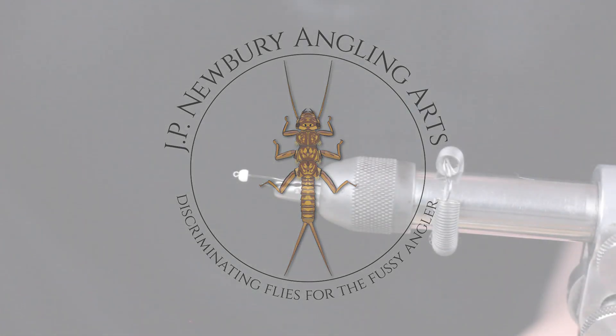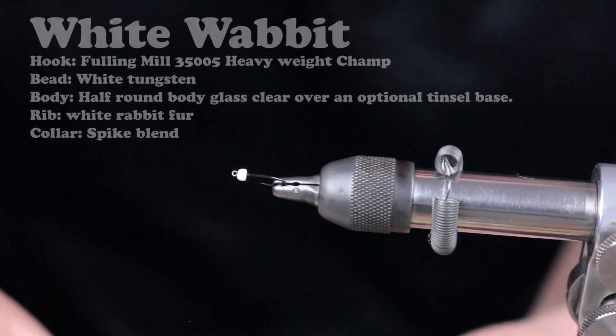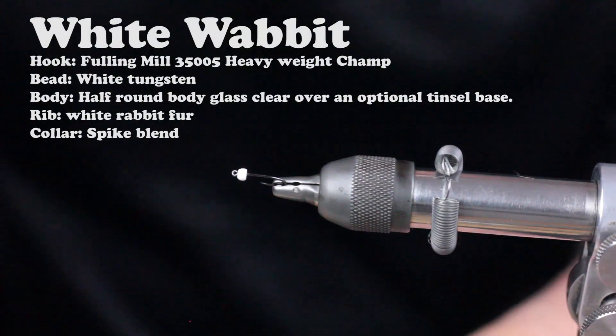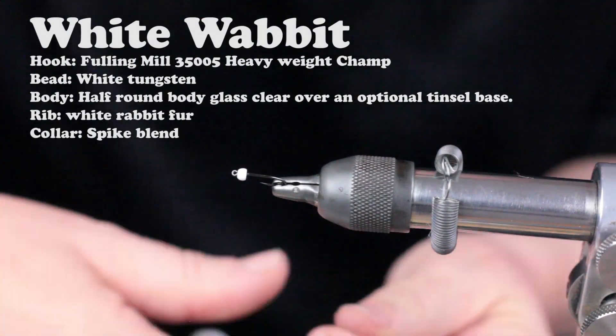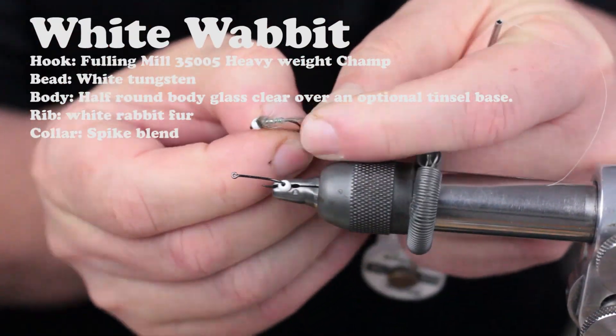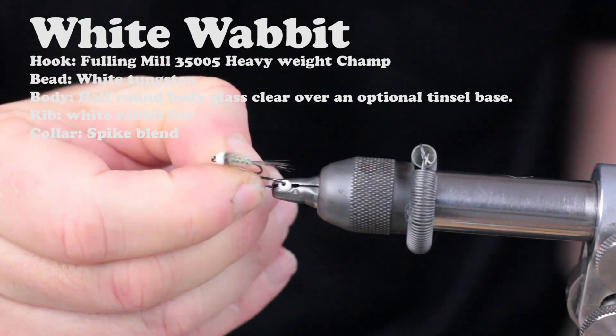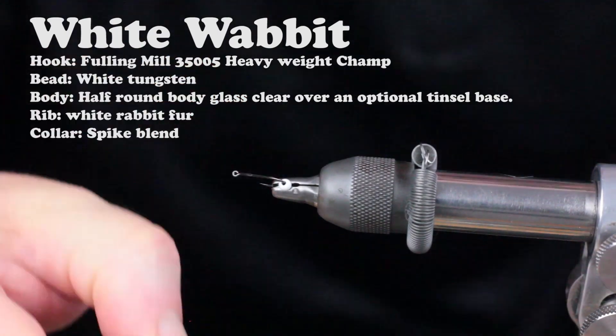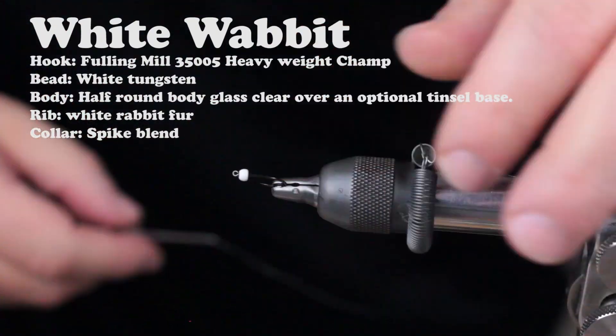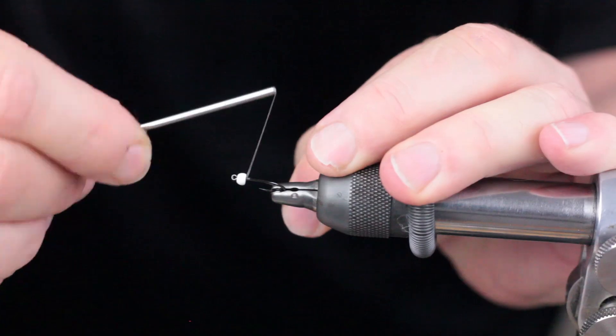The fly I'd like to tie for you today is the White Wabbit, which is an intriguing fly to me because it has a reflective glow, an inner glow quality to it, and a transparency, translucency effect, a halo of fur. It's a very buggy, fishy pattern that I like to use as a follow-up to other patterns or behind other anglers who may be using something entirely different.